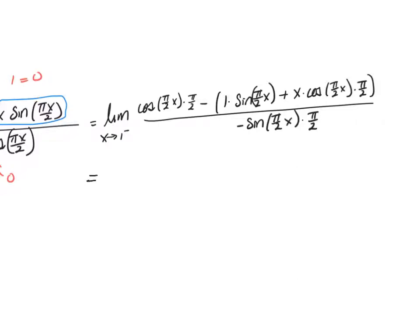I can do direct substitution now. As x approaches 1, πx/2 becomes π/2. The cosine of π/2 is 0, so the first term is 0 multiplied by π/2. Then inside the parentheses, I have 1 multiplied by sine(π/2), which is just 1, so times 1. Plus x times cosine(π/2), which is 0, so times 0.